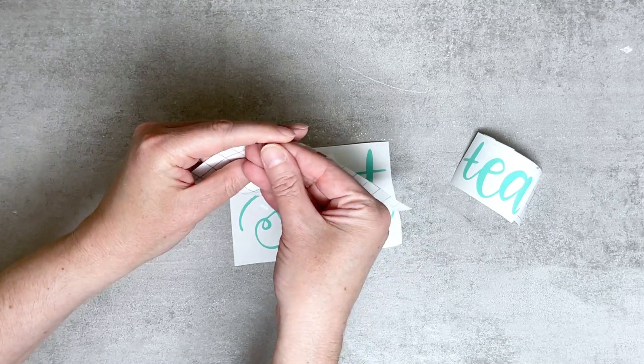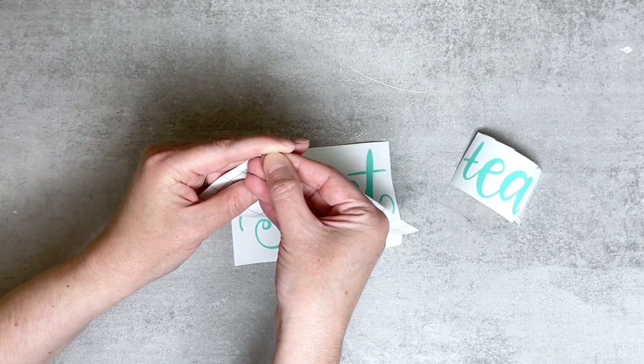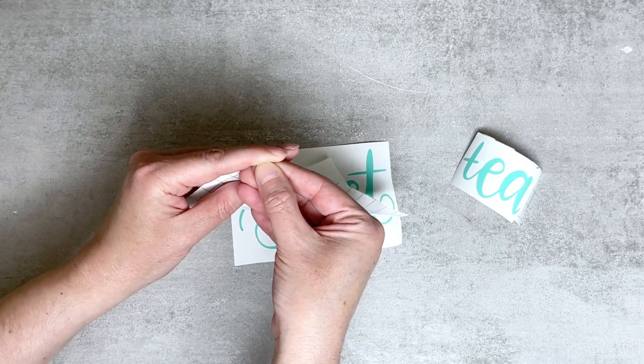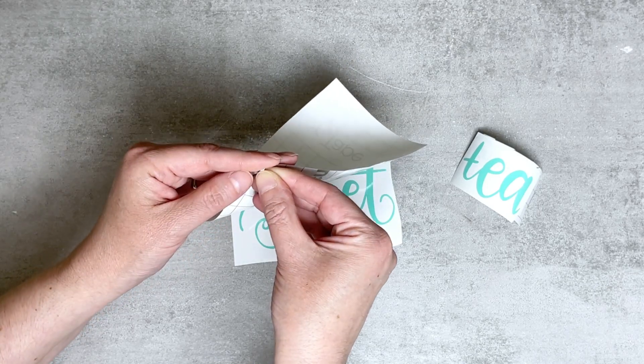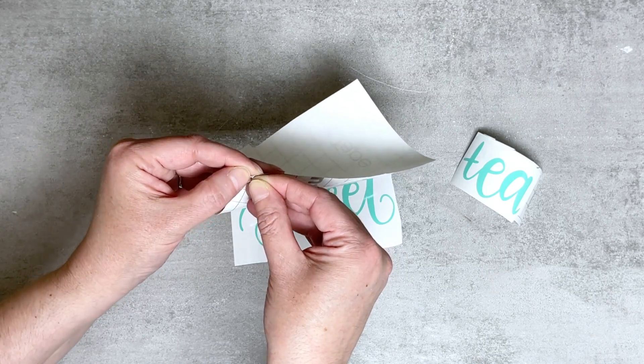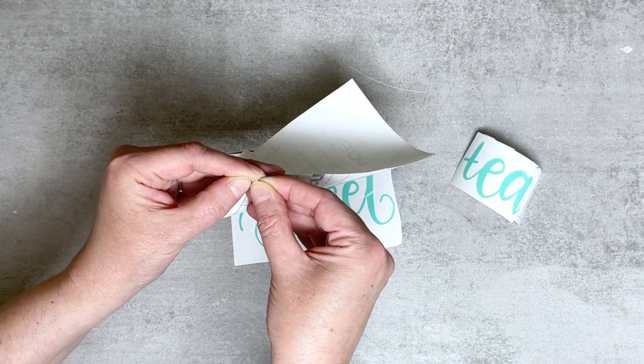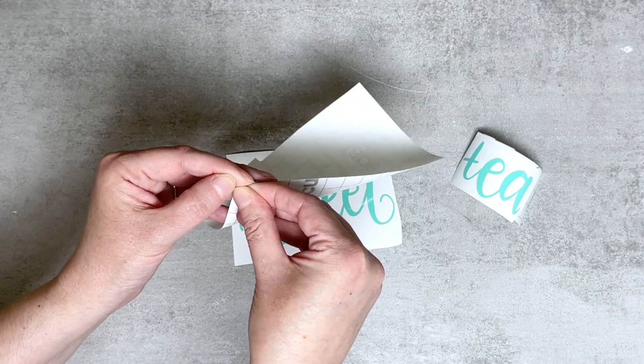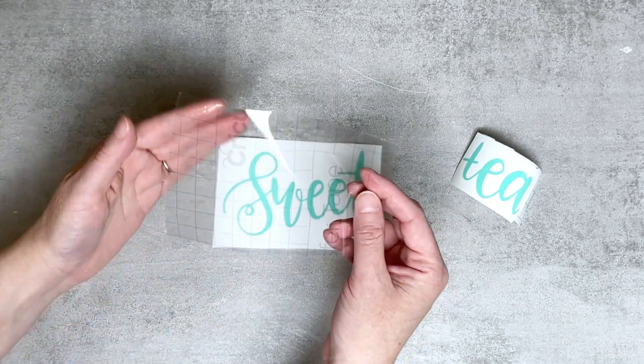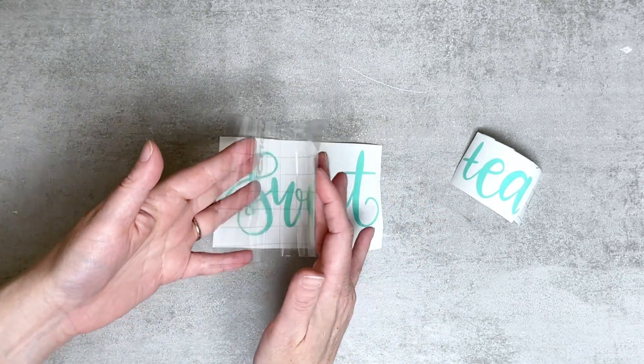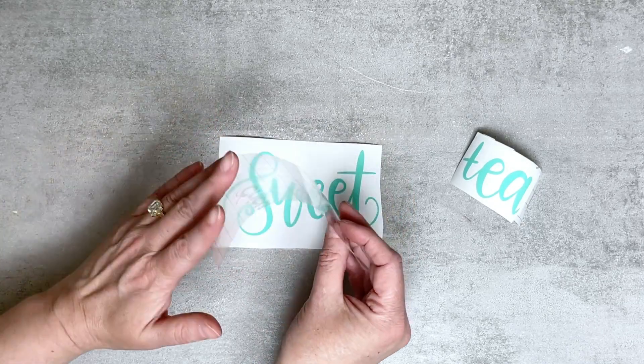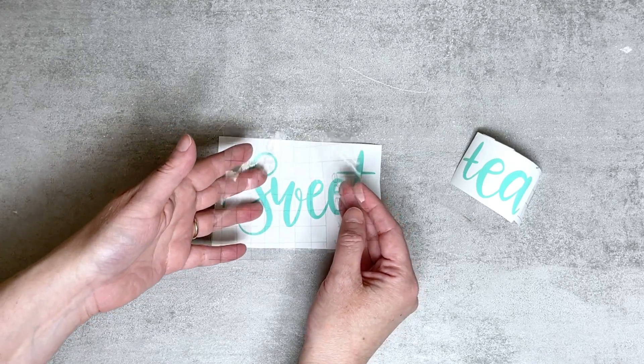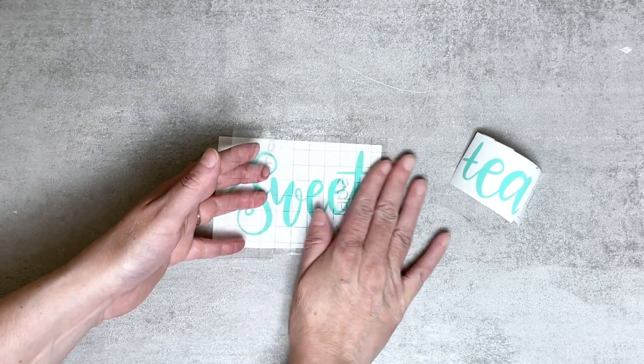So whenever you're working with transfer tape, just remember that it's basically a clear, sticky sheet on top of a paper backing. We're just going to remove the sticky sheet portion from the backing so that way we can apply the sticky sheet to our decal here. Transfer tape works best when you work on small sections at a time. I like to hold it in both hands and make kind of a V shape. We're going to place this down in the center of our decal and just roll it out.